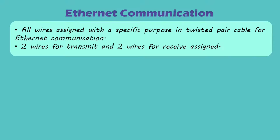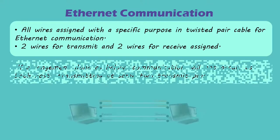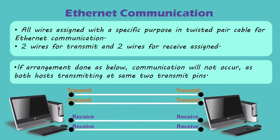Ethernet and Fast Ethernet uses two wires for transmit and two wires for receive functions. Here, as shown in the first figure, if we directly connect the two transmit pins of both hosts or computers together and the two receive pins of both hosts or computers, then communication will not happen, as transmitted data won't be received by the second host or computer.